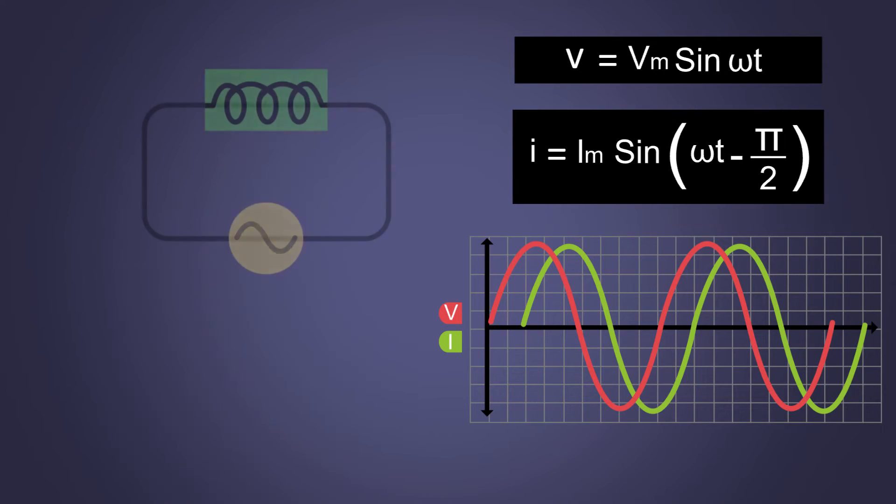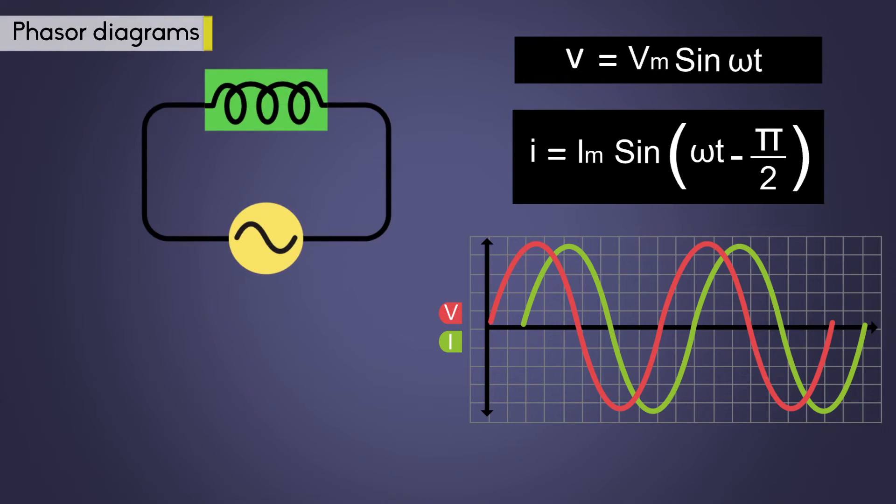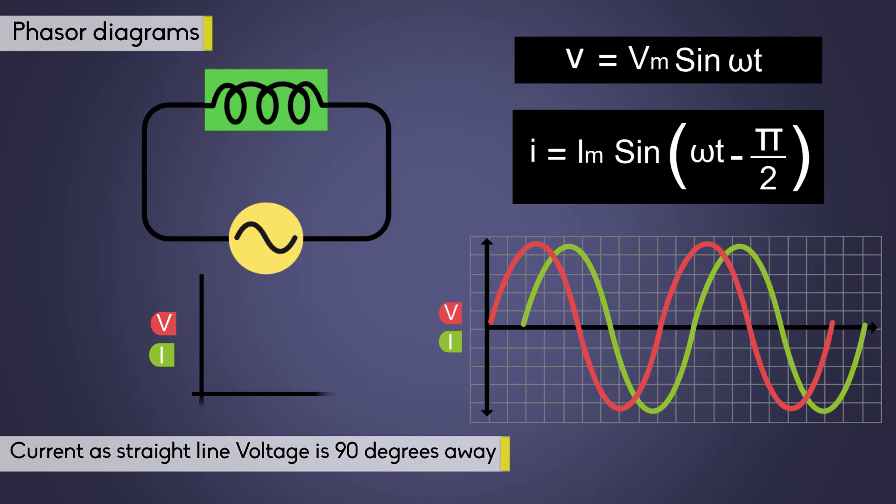Now, let us look at the phasor diagram. As current lags the voltage by 90 degrees, the phasor has to be 90 degrees apart. Current is taken as reference in all the circuits and it is written as a straight line. Voltage is written 90 degrees away and ahead the current line in the upward direction suggesting that it is leading the current.